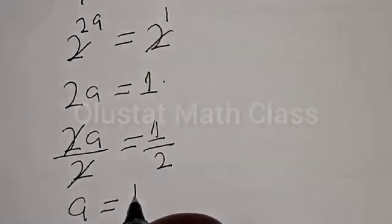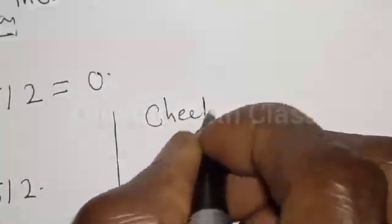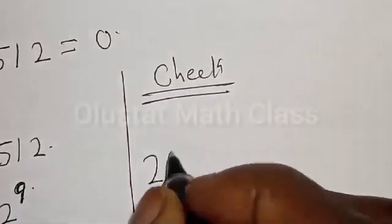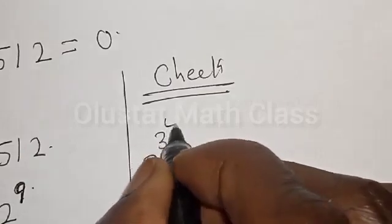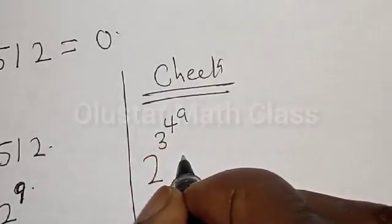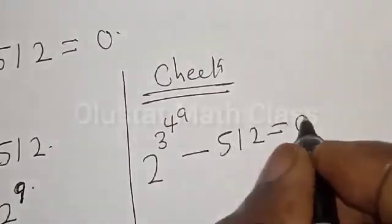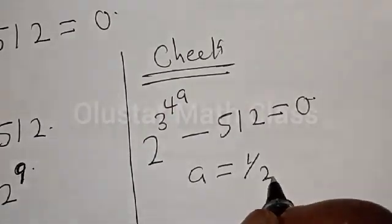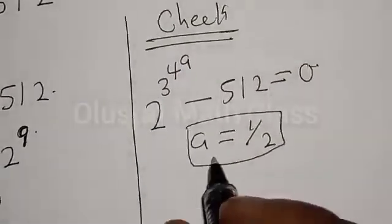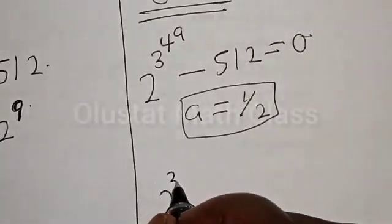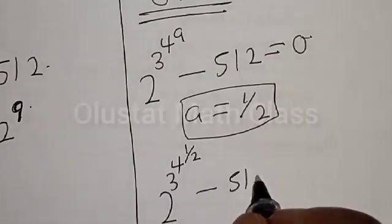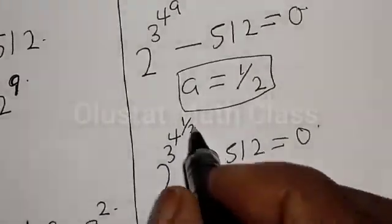That is the final answer. Let's check to confirm if our answer is right. We have the given equation 2 raised to power 3 raised to power 4 raised to power a, minus 512, must be equal to 0. Remember, a is equal to 1 divided by 2. So we have 2 raised to power 3 raised to power 4 raised to power 1/2, minus 512, must equal 0.